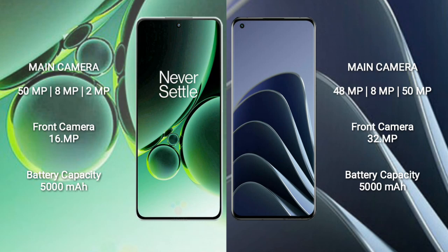OnePlus Nord 3 features a rear triple camera setup: 50MP, 8MP, and 2MP, with a 16MP front camera. OnePlus 10 Pro also features a rear triple camera setup: 48MP, 8MP, and 50MP, with a 32MP front camera.